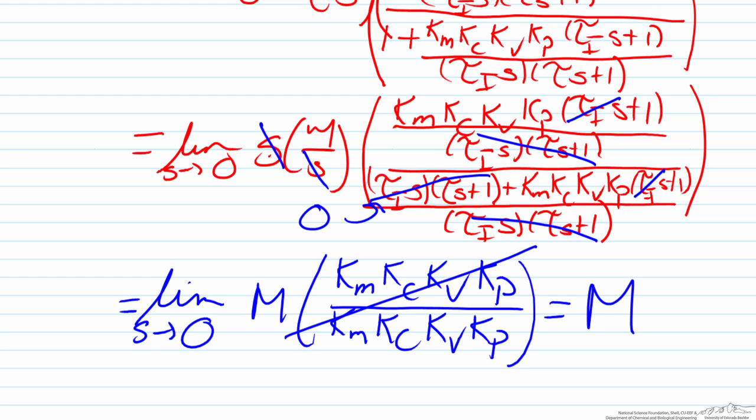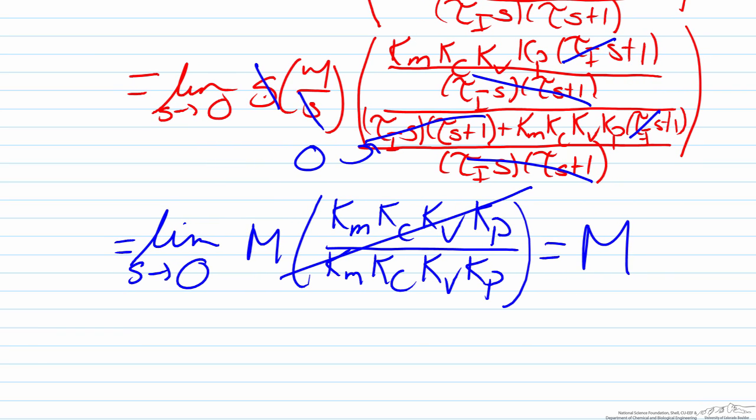Recall that this is the value that we would want to have if we have a change in our set point of magnitude M. We would want our output value to change by that exact same value. So therefore the PI control does what we would want it to do as it gives us zero offset.